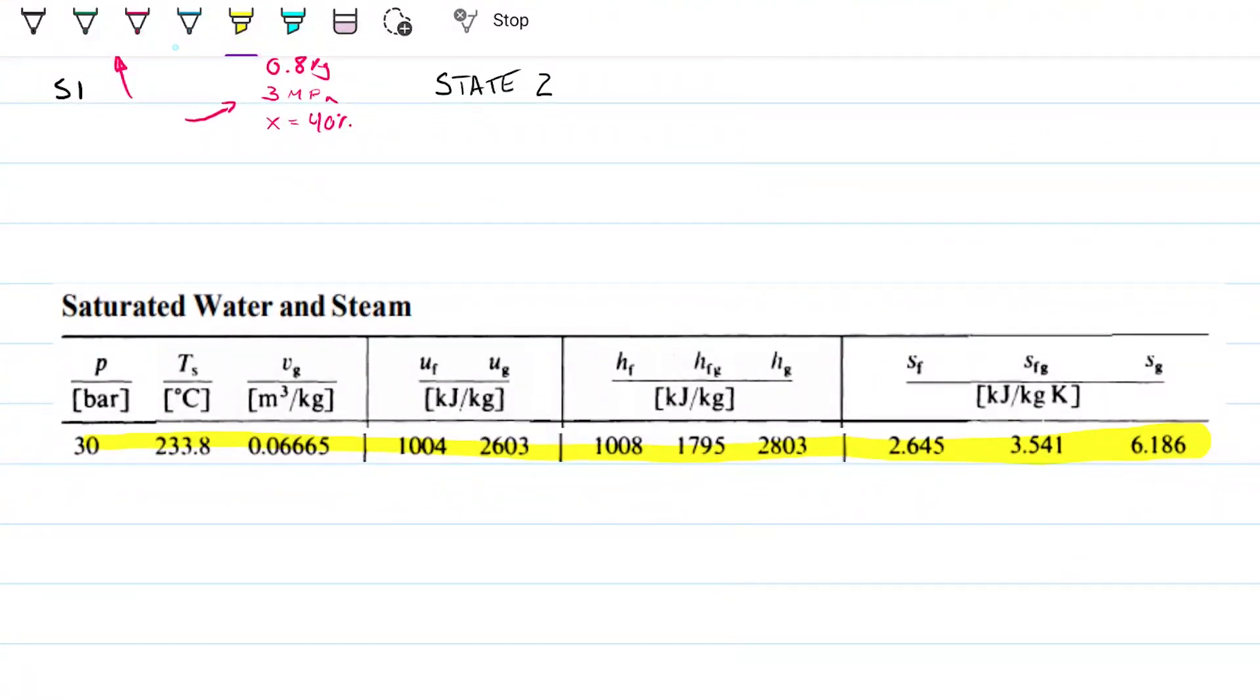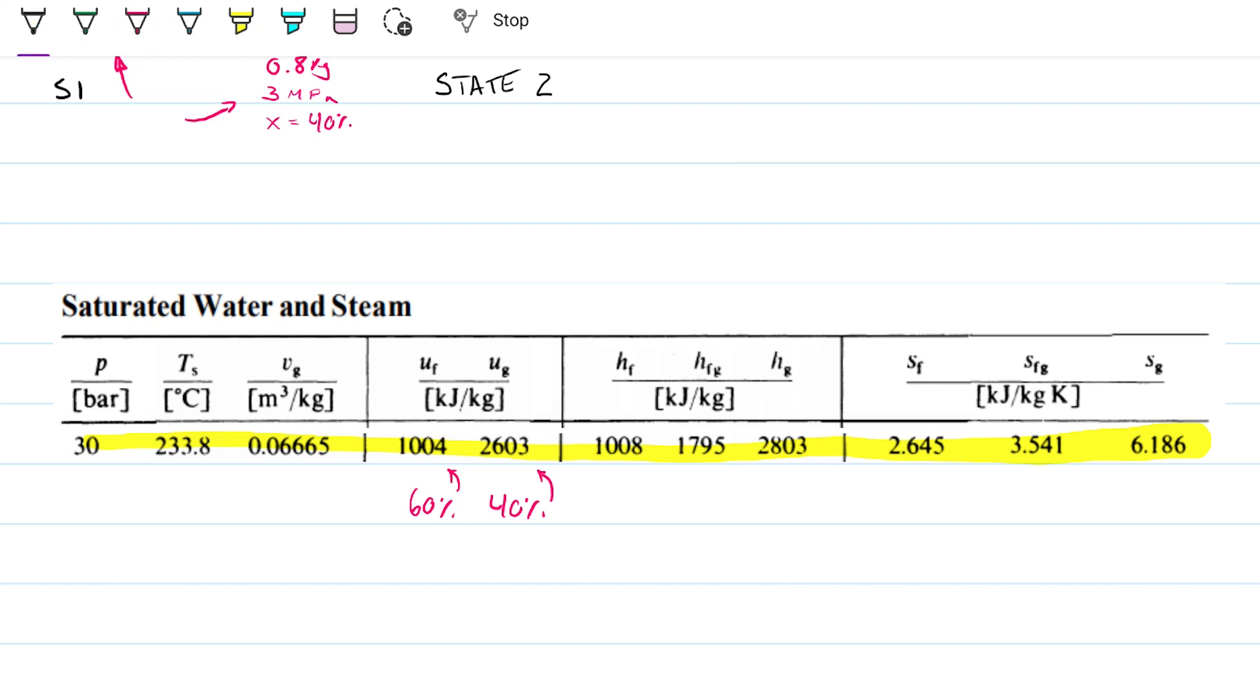And I have 40% quality, so that means that I have 40% contribution from this fella and 60% contribution from this fella. And therefore, if I want to find out what is the internal energy for this guy, I'll need to do this.